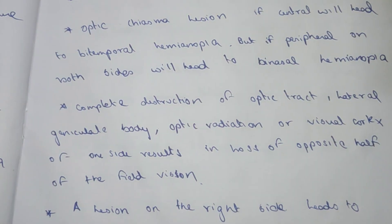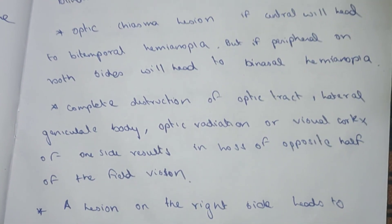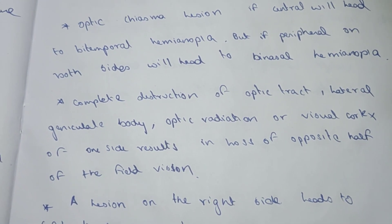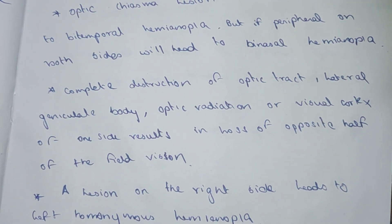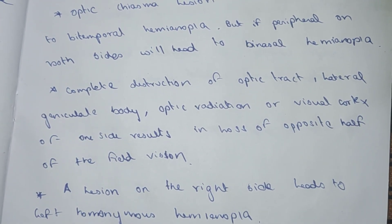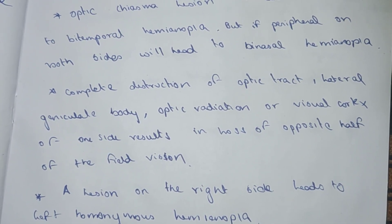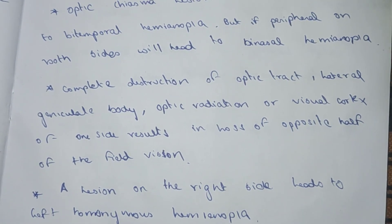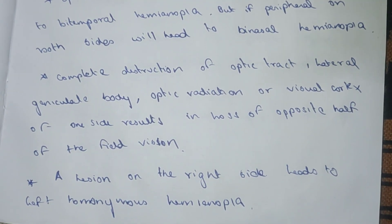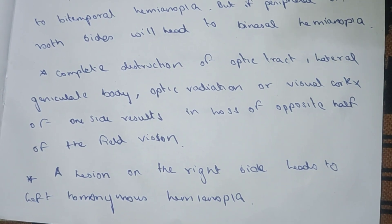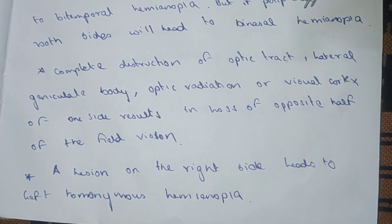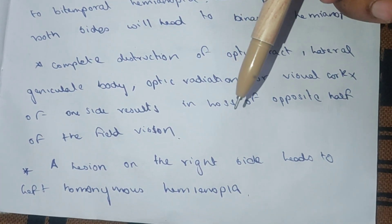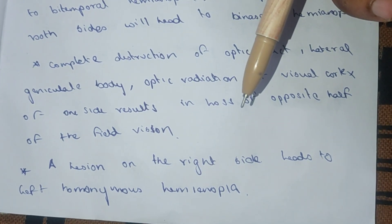Complete destruction of the optic tract, lateral geniculate body, optic radiation, or visual cortex on one side results in loss of the opposite half of the visual field — contralateral hemianopia. For example, a lesion on the right side leads to left hemianopia.